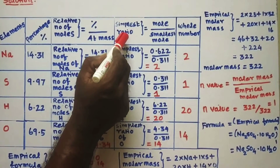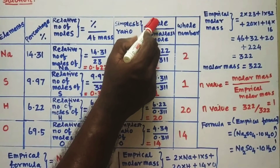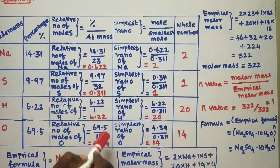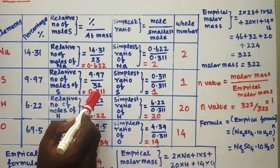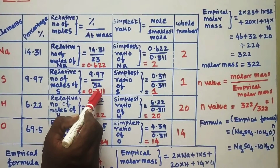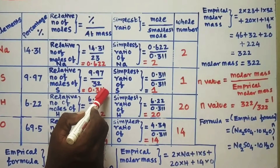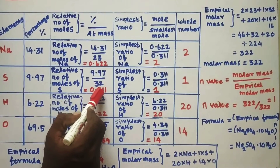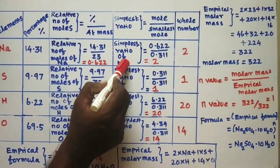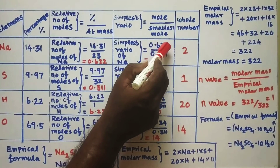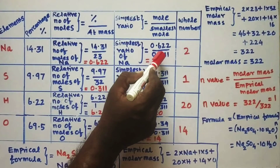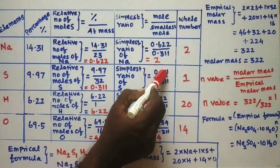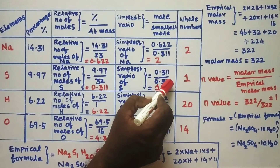Now for the simplest ratio, the formula is mole divided by the smallest mole. Among the four elements, the smallest mole value is that of sulfur, which is 0.311. Therefore all other mole values are divided by 0.311. Simplest ratio of sodium = 0.622 ÷ 0.311 = 2. Simplest ratio of sulfur = 0.311 ÷ 0.311 = 1.